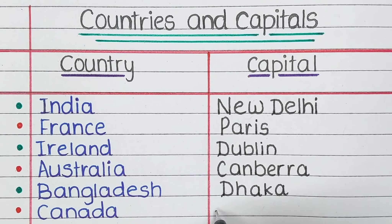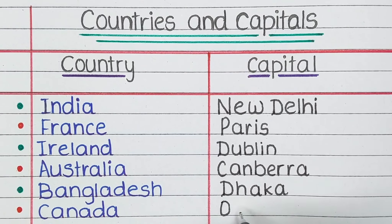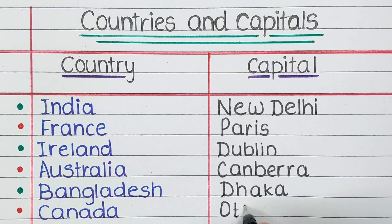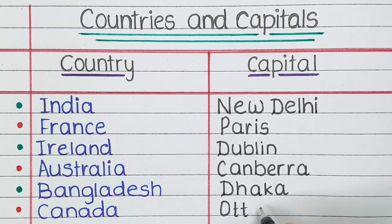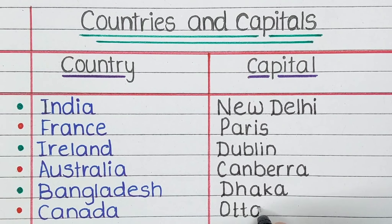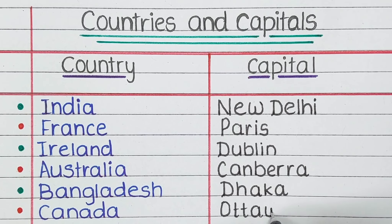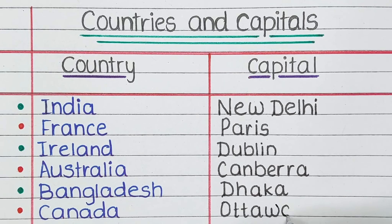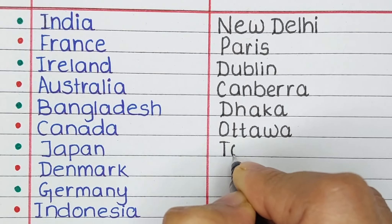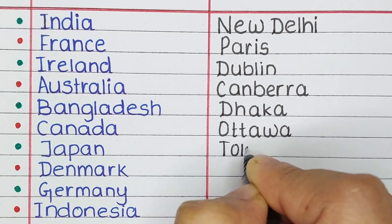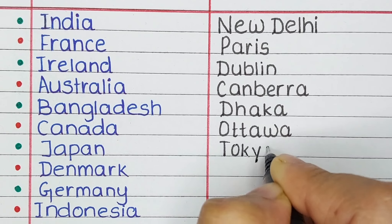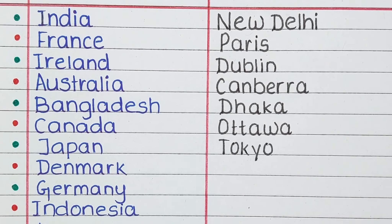Next is Bangladesh. The capital of Bangladesh is Dhaka. Next country is Canada. Its capital is Ottawa.